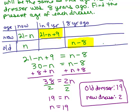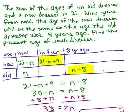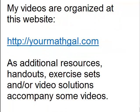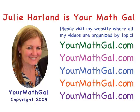It doesn't matter if you let your variable be for the new or the old dresser. If you let the old one be your variable, then when you solve for it you'll find out how old the old dresser was first. The first way I did it, I found out the new dresser was 2 first. So that was a tricky but fun puzzle. Please visit my website at yourmathgal.com where you can view all of my videos organized by topic.